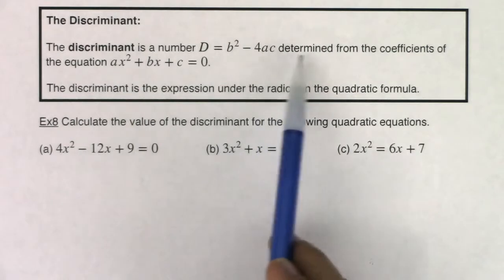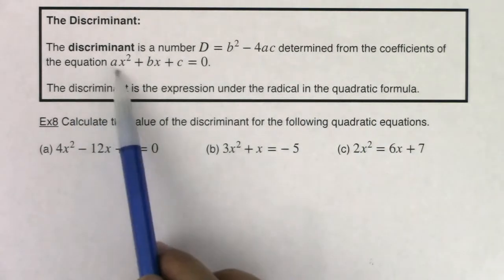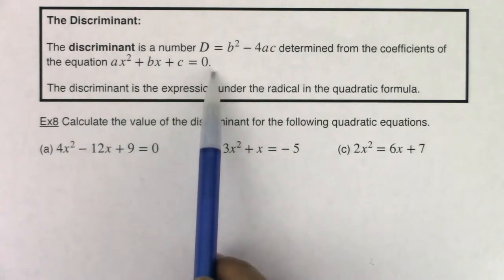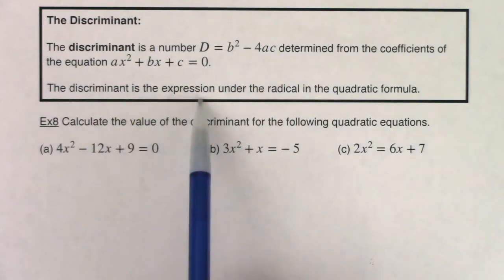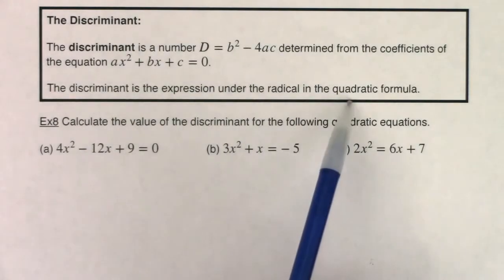b squared minus 4ac, determined from the coefficients of the quadratic equation, ax squared plus bx plus c equals 0. The discriminant is the expression under the radical in the quadratic formula.